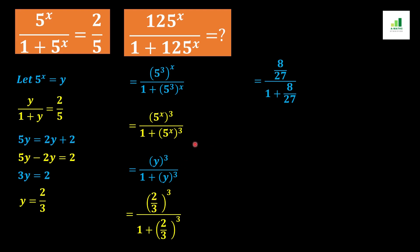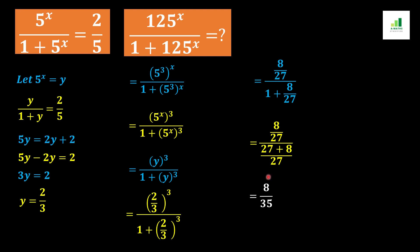We compute: 2^3 is 8 and 3^3 is 27, so the numerator is 8 over 27. The denominator becomes 1 plus 8 over 27. Multiplying through by 27, the denominator is (27 + 8) over 27, which equals 35 over 27. The 27s cancel, leaving 8 over 35.